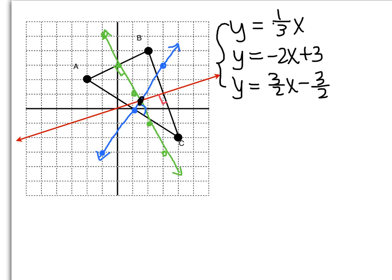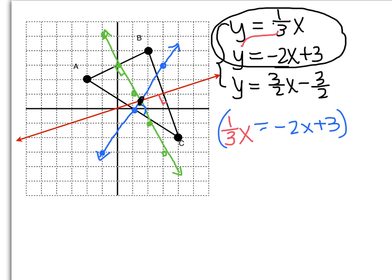I will pick the top two, and then I will check it using the last equation. Using substitution, I am going to take 1/3 x and plug it in for y. So I have 1/3 x, and that will be equal to -2x + 3. To get rid of the fractions, I will go ahead and multiply everything by 3, which means I have x is equal to -6x + 9. I can add my 6x to both sides. So 7x is equal to 9 and x is equal to 9/7.